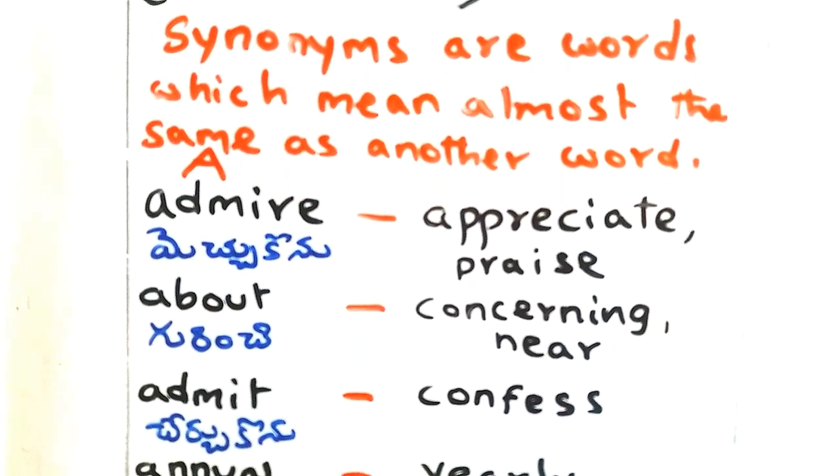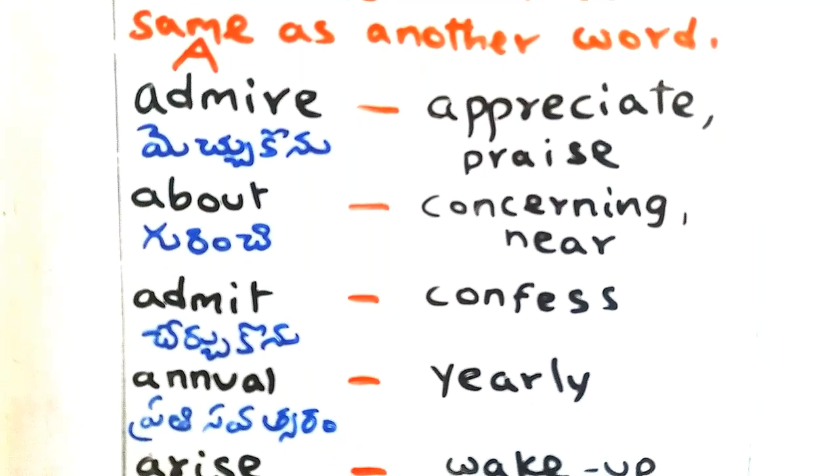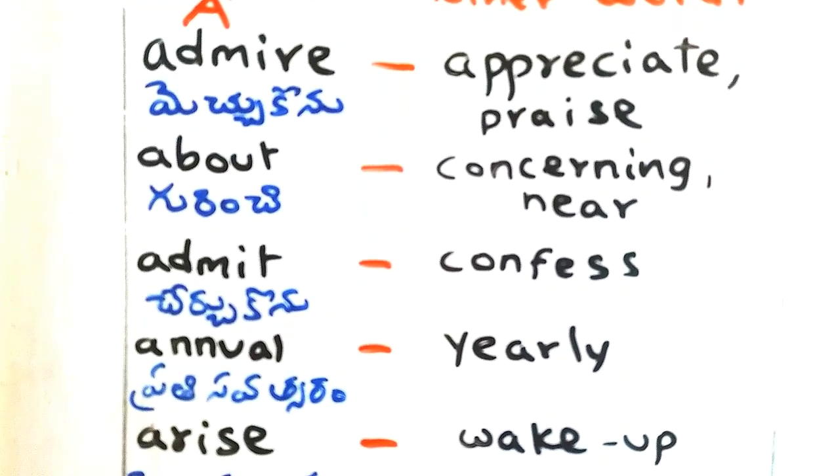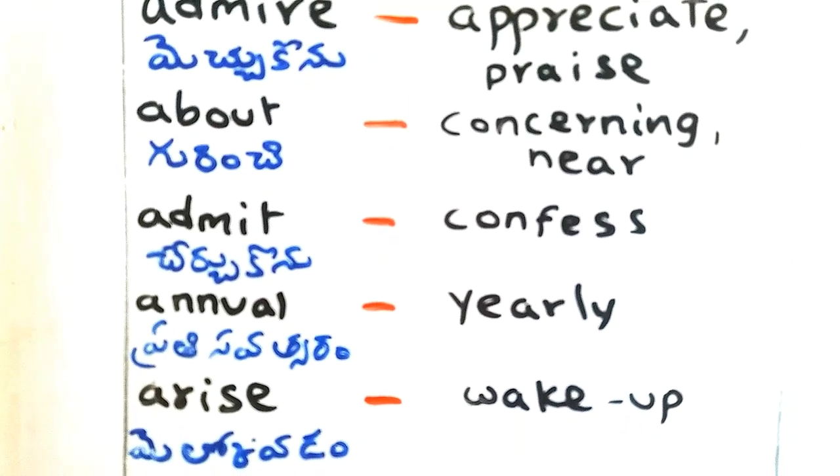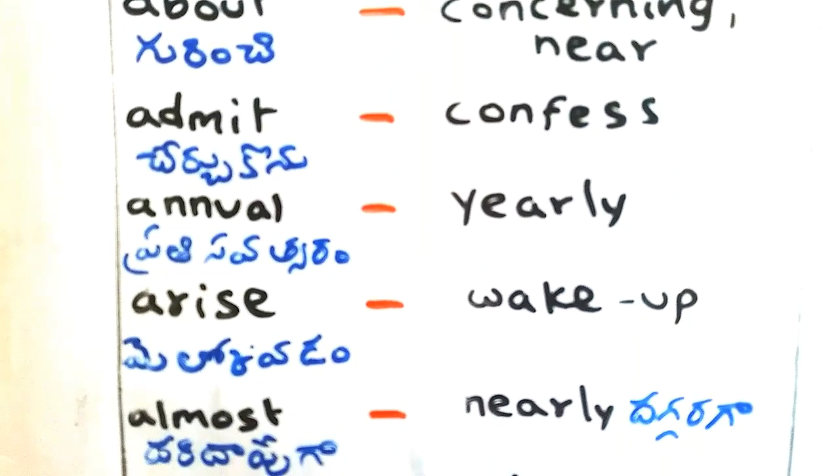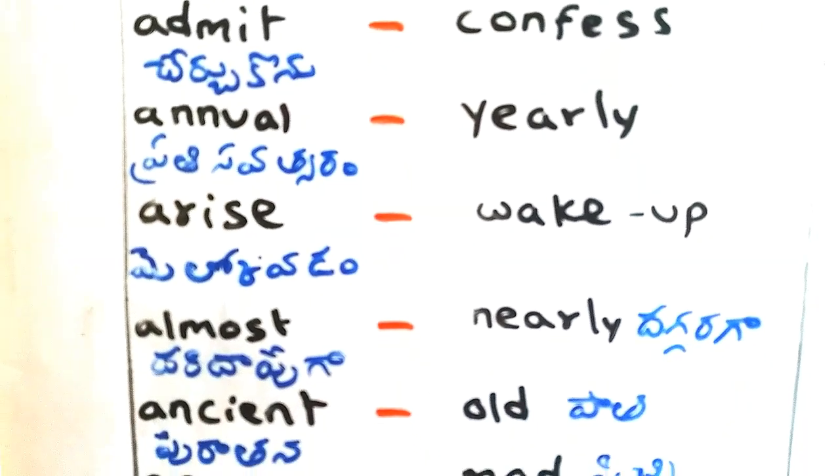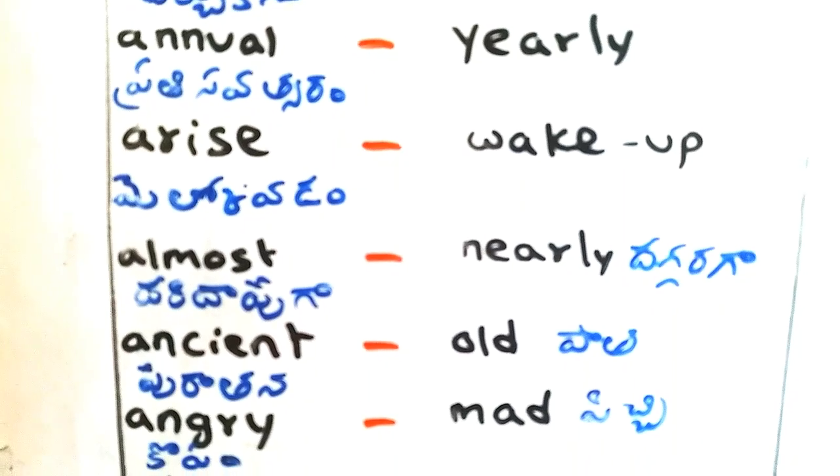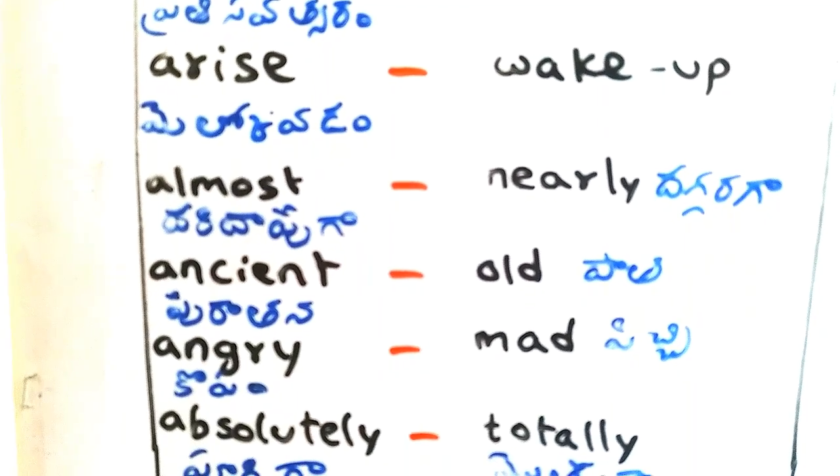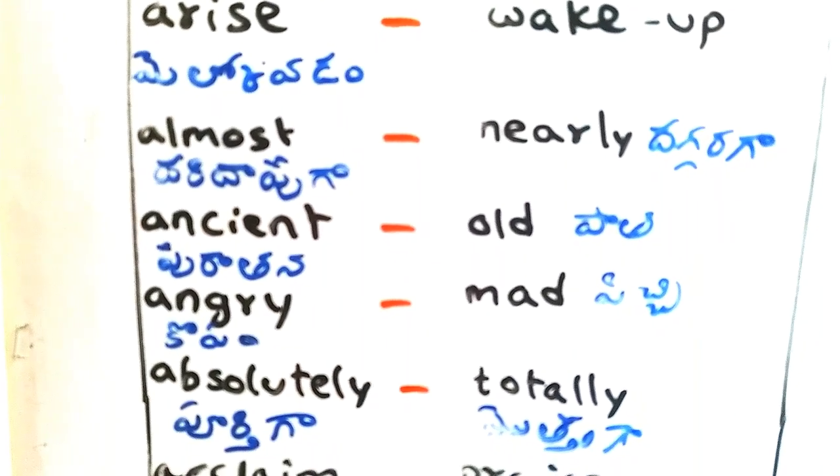Admire - appreciate, praise. About - concerning, near. Admit - confess. Annual - prathisamacharam, yearly. Arise - mailcodeam, wake up. Almost - daridapuka, nearly.